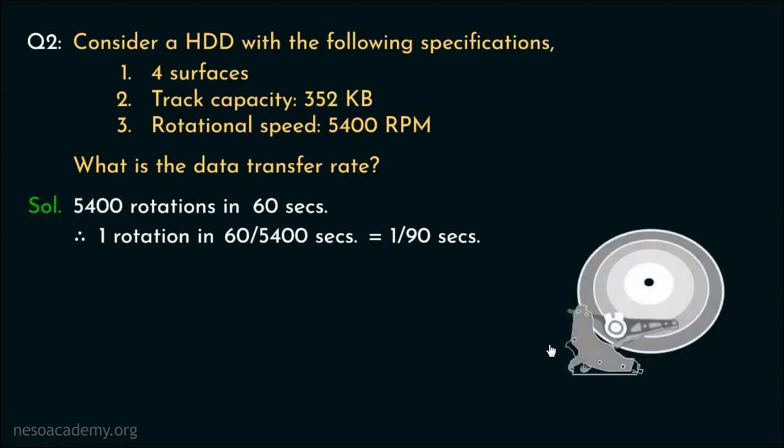Interestingly enough, in one rotation, the track of the surface over which the read-write head is currently situated can be read. Basically, following this convention, this read-write head can read this entire track in 1 by 90 seconds. Now since the track capacity is mentioned as 352 KB, therefore, in 1 upon 90 seconds, technically, 352 KB of data is transferred.